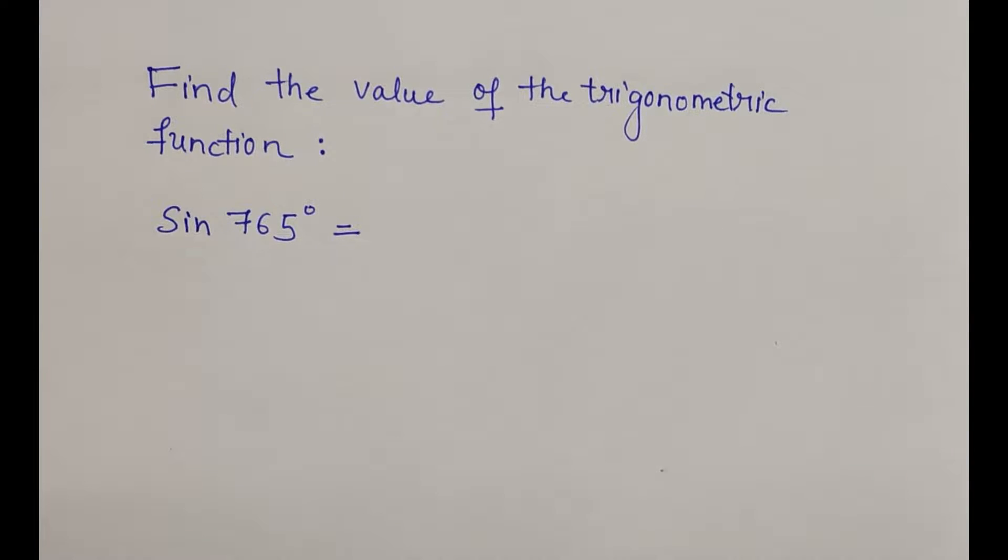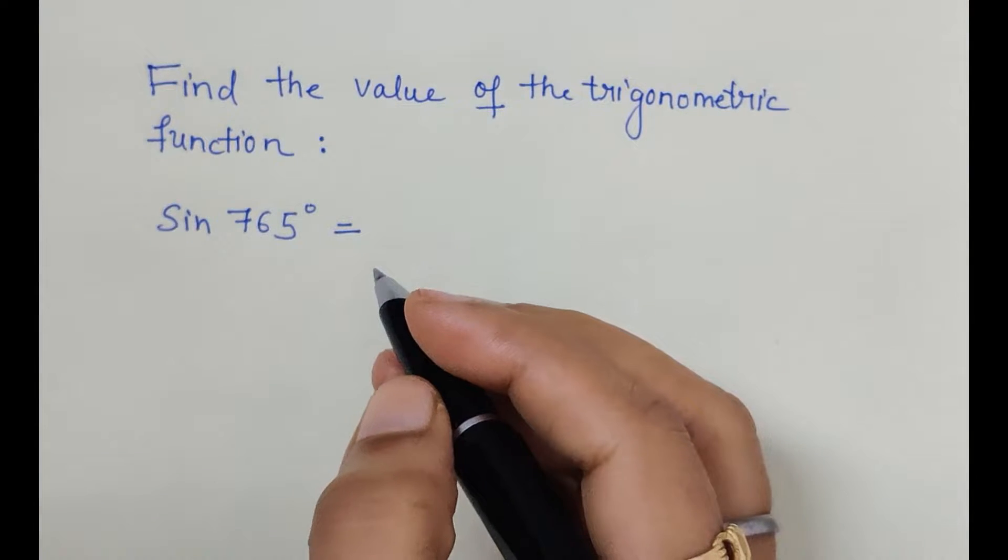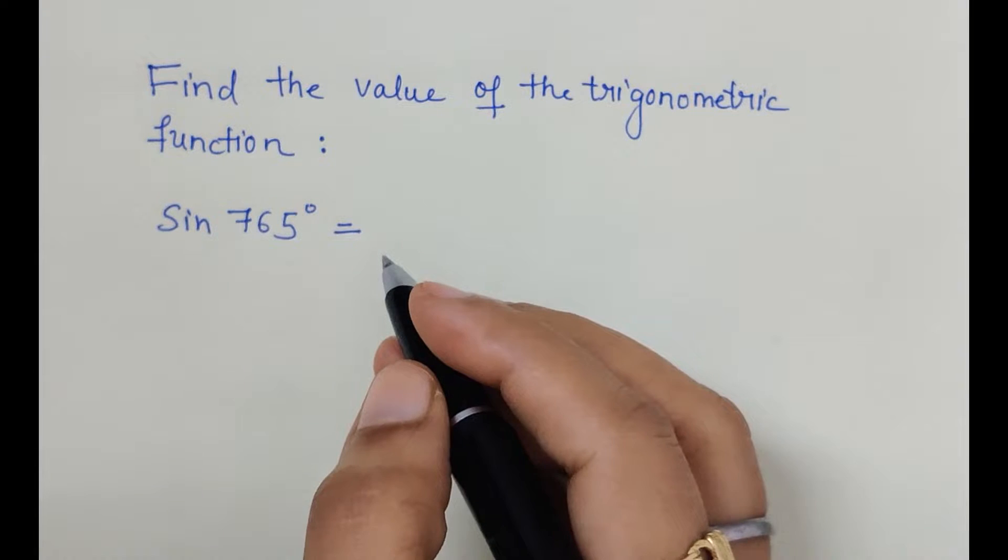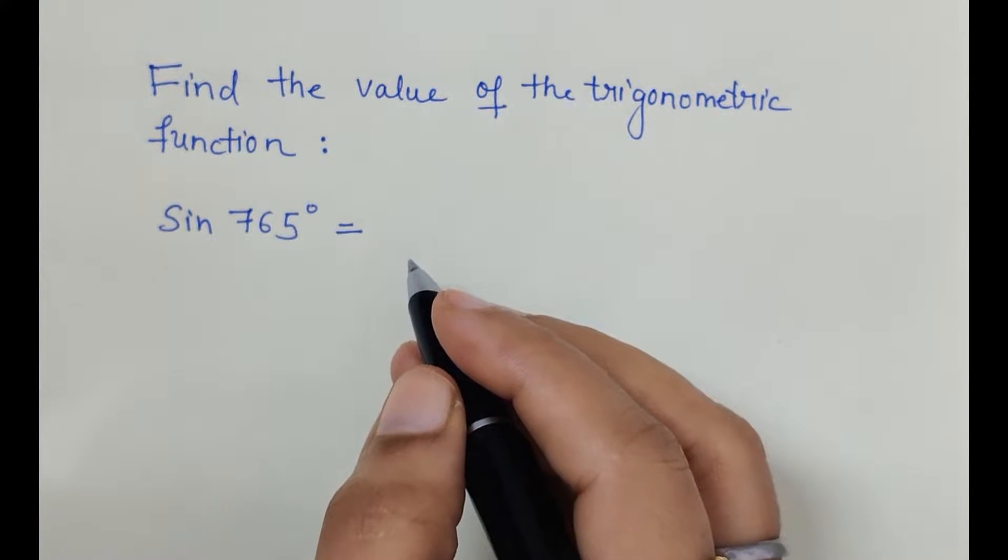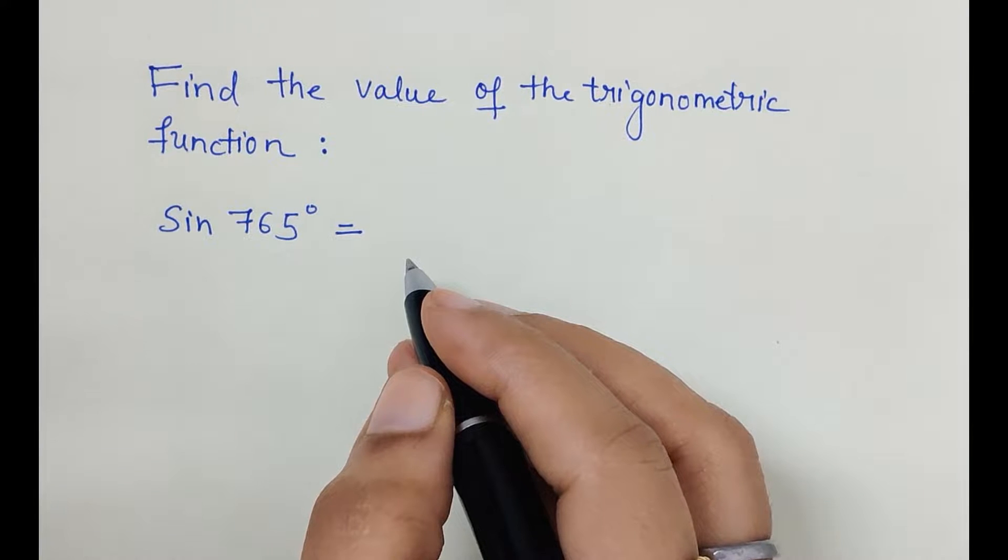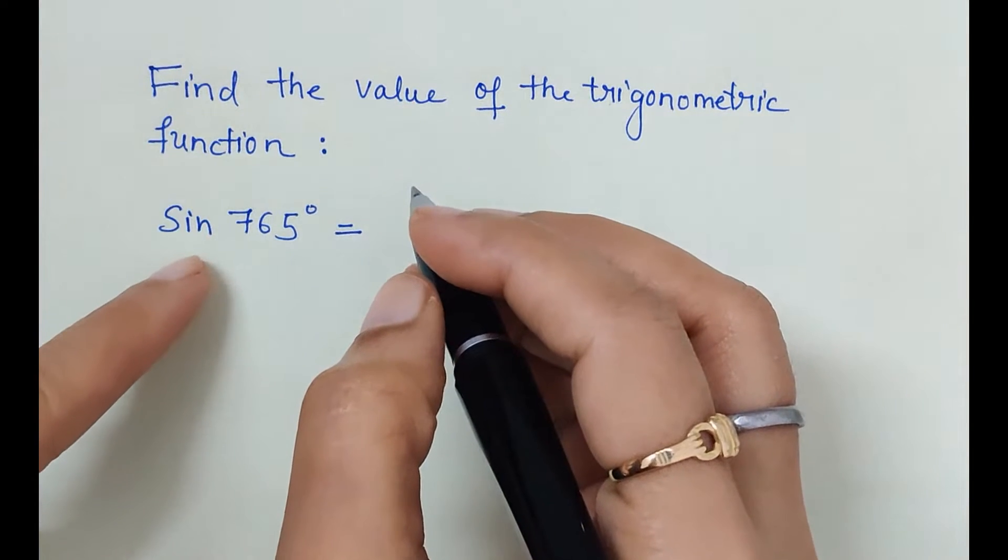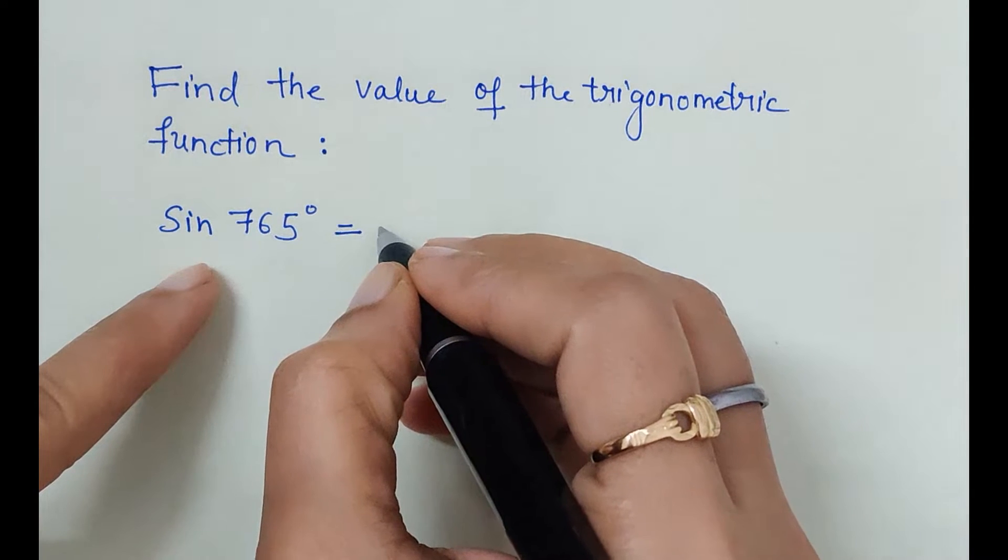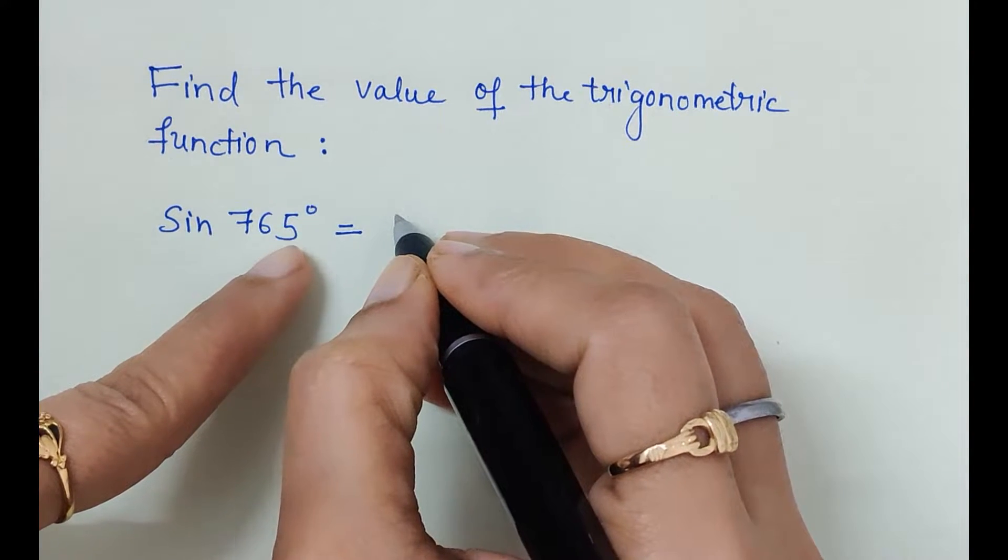Hello friends, let's see this problem: sine 765 degrees. Here we have to find the value of sine 765. We will use the concept that the value of sine repeats after 2π interval. 2π means 360 degrees. After 360 degrees, the value of sine repeats, so we will write this angle in terms of 360 degrees.